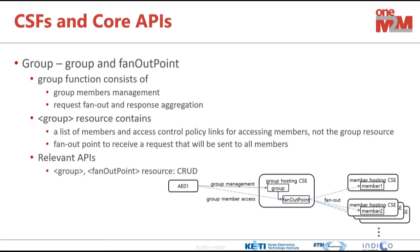The group feature is one of my favorites. We create a group of resources, and resources can represent devices, entities, or data. We can leverage this feature across different concepts once they are unified as oneM2M resources. Using the fanout point, we can send a batch request or batch operation to that fanout point, and the CSE with that group will fan out the request, aggregate the responses, and send it back to the originator.